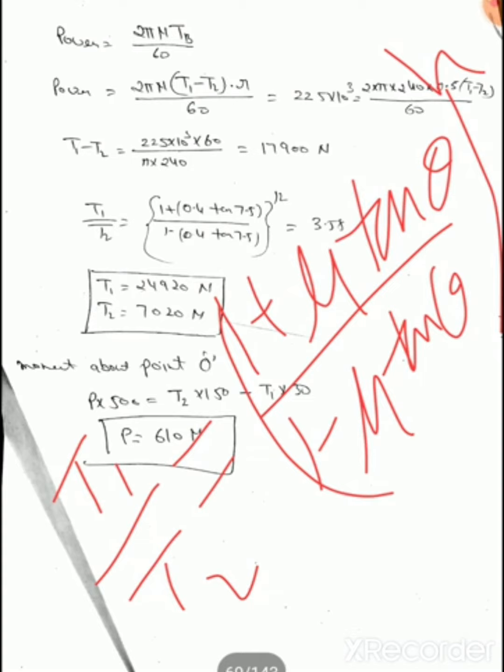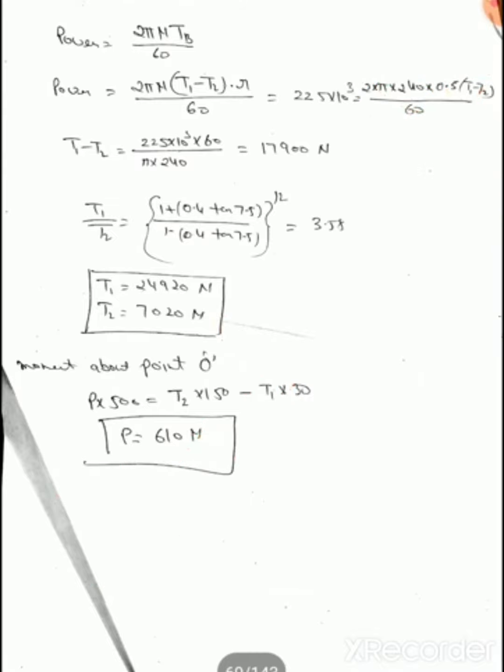T1 is the tension in the tight side for the very first block, and T2 is the tension in the slack side after n number of blocks. n is the total number of blocks (11, 12, 13, etc.). This is the end of today's lecture. Thank you.